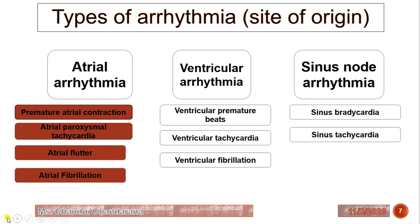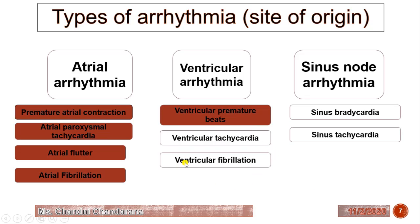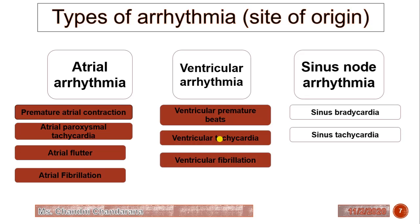Ventricular arrhythmia originates from the ventricle and is classified into three types. First is ventricular premature beats, which can lead to two conditions: ventricular tachycardia and ventricular fibrillation. In ventricular tachycardia, excessive ventricular contraction rates affect cardiac output. Ventricular fibrillation is the most serious type of arrhythmia, where ventricular coordination is completely lost, cardiac output becomes zero, and death may result if left untreated.